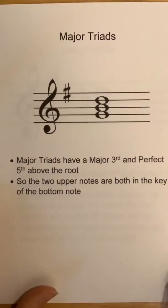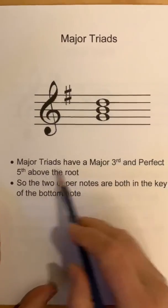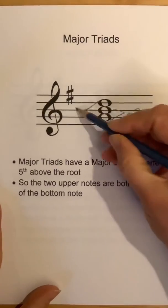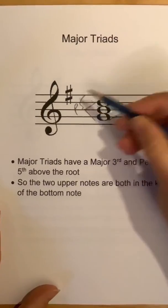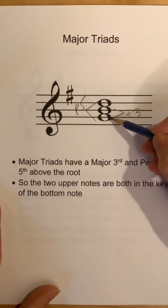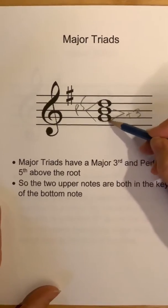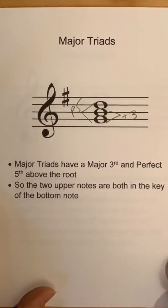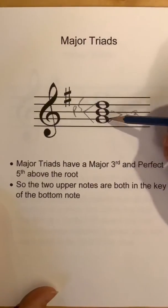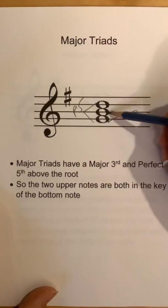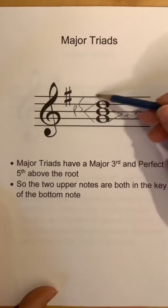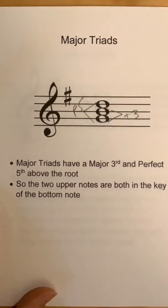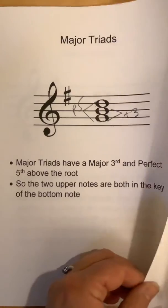A major triad: major triads have a major third at the bottom interval and a perfect fifth at the top. Both these top notes fit into the key of G major — G major is one sharp. You won't always have a key signature when trying to figure out your triads, but here we do. G major gives us B natural and D natural. It's a major triad — major third, perfect fifth. The upper two notes are both in the key of the bottom note.